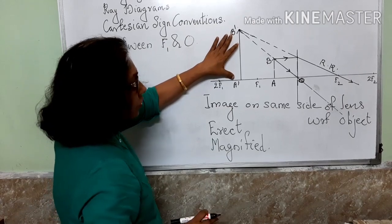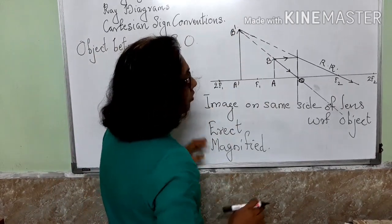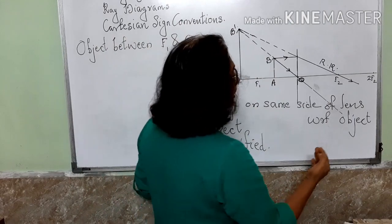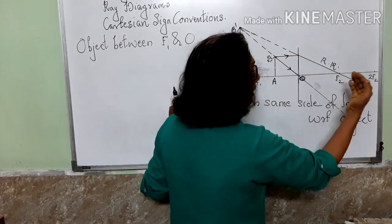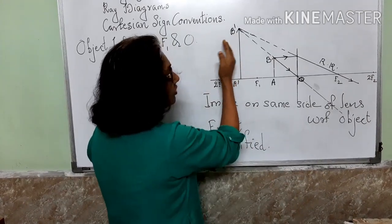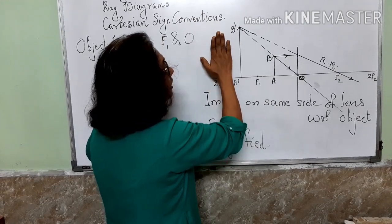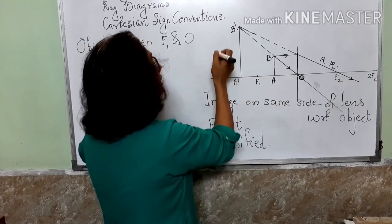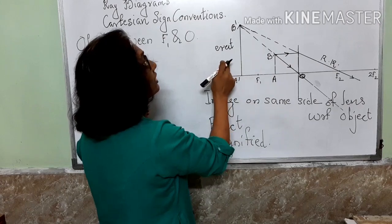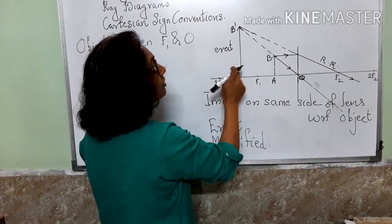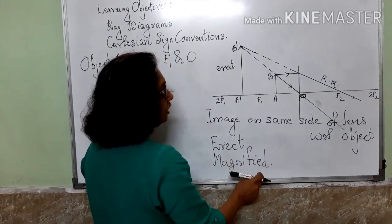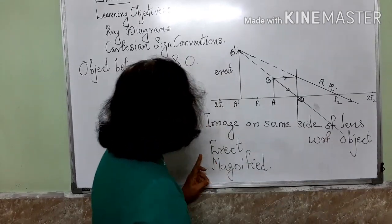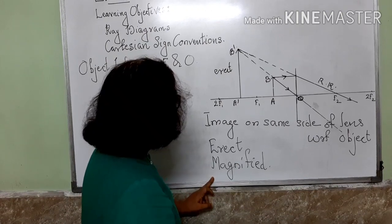It is an erect image. All other images that we got were inverted, and at that time we discussed that we get a real image because we could keep a screen and get the image on the screen. Over here we cannot cast it on a screen — it is an erect image. Comparing the size, the image is bigger than the object, so it is a magnified image. Position of the image is on the same side of the lens with respect to the object. Nature is erect and magnified.